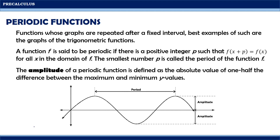Below is an example of a graph of a periodic function. Notice that from this point up to this point is considered as one period of the graph, because beyond these points the graph will simply repeat the pattern. Moreover, the amplitude is from here up to here, since this is one-half of the distance between the maximum point and the minimum point.